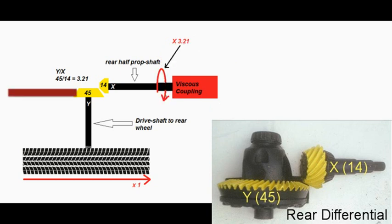Again, by dividing the number of teeth on gear Y by the teeth on X, that is 45 divided by 14, it can be calculated that for every turn of the wheel, the rear half of the prop shaft turns 3.21 times.